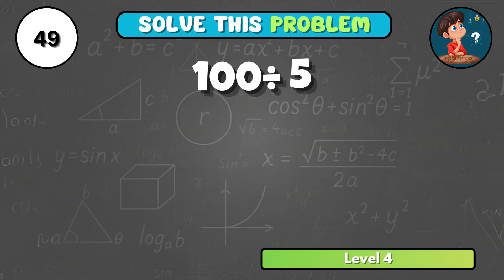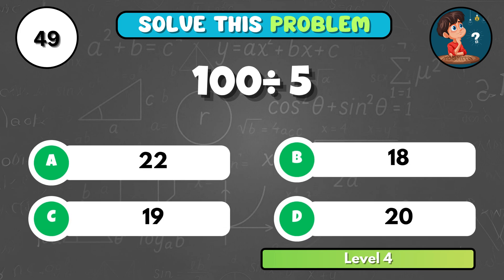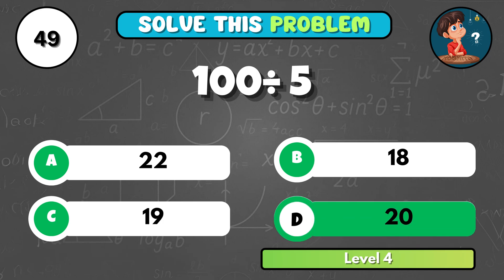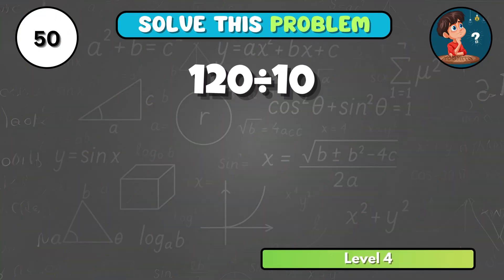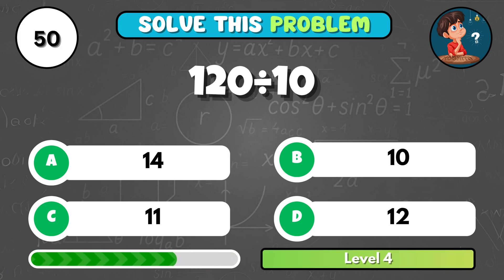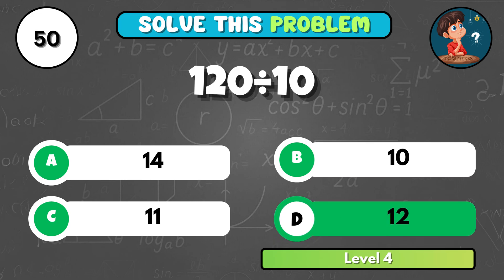Nearly done — one hundred divided by five equals... That's D, twenty. And the final one: one hundred twenty divided by ten equals what? It's D, twelve. Great job, learners!